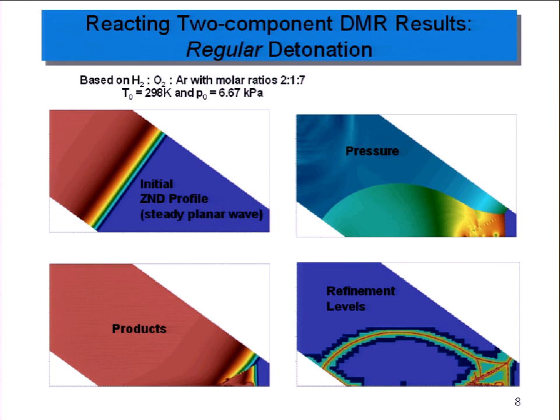Here are some simulation results. Shown here is the initial condition, and also the pressure, the product, and the refinement levels. The red shows the highest refined section, and the blue shows the coarsest. The way we start this simulation is we use a steady solution. Detonations are unsteady, but you can't just start off with an unsteady solution. You don't know the solution, so you use an approximate theory to start out.